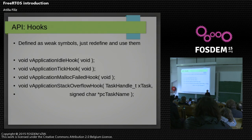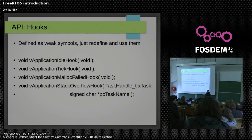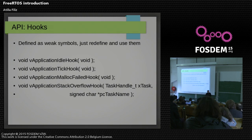We have several hooks. These are some example hooks available. They are normally defined as weak symbols, so if you need to use them you can redefine them or compile them out. The application idle hook runs whenever the processor is idle. A tick hook fires at every clock tick. A malloc failed hook runs whenever a malloc fails. A stack overflow hook runs whenever a stack overflows — it gives you a handle to the task and even the task name string so you can immediately do something about which task has been overflowing its stack.